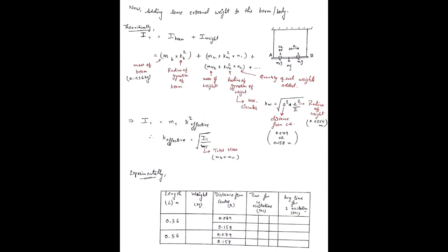Grossly for the system we can write moment of inertia equals m into k squared, where m is the total mass, that is mass of beam plus mass of weight, and k is k effective, that is the effective radius of gyration. By this equation if we have calculated it, we can get the effective radius of gyration. We will compare this with the values obtained experimentally and then we will conclude accordingly. Now let's perform the experiment.